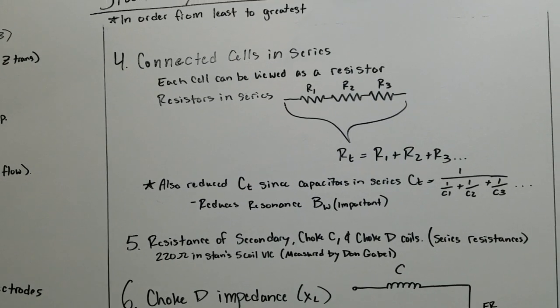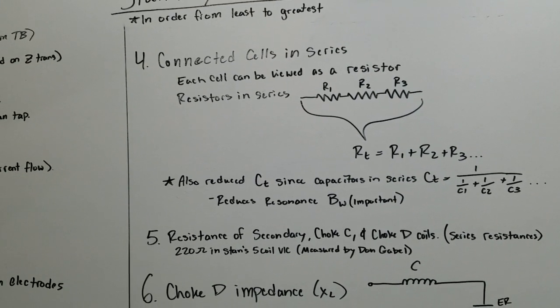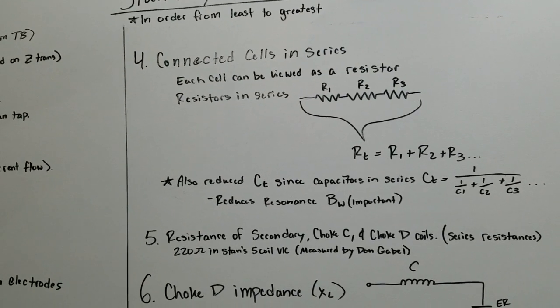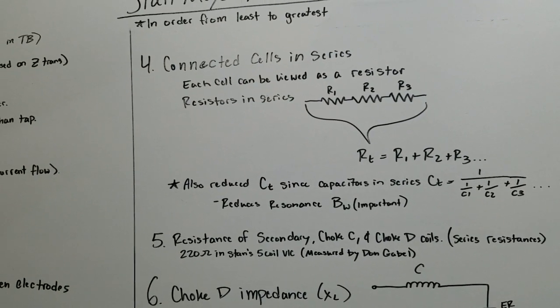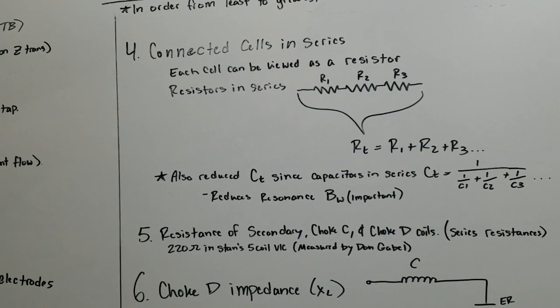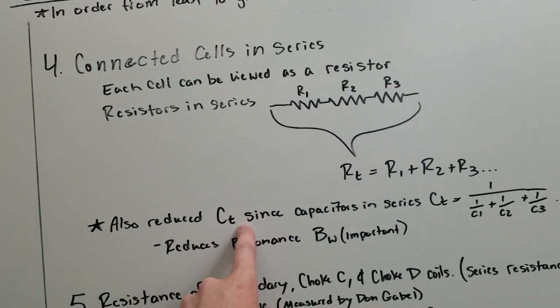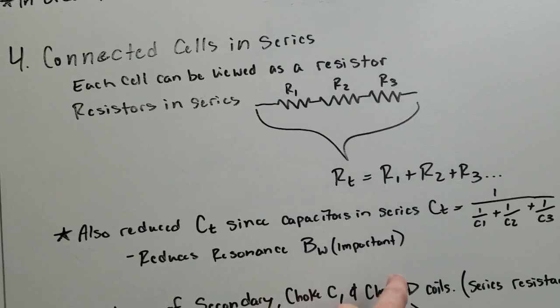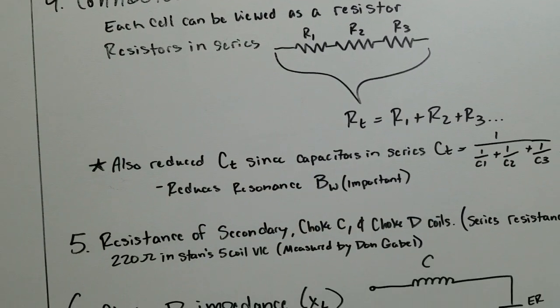Now that displaces water out of the cell. Not only that, but the gas bubbles, the hydrogen and oxygen, have a dielectric constant of one or close to one, which is about 78 times less than what water's dielectric constant is. So if you can reduce the total capacitance, you can reduce the resonant bandwidth and the effect it has on resonance.